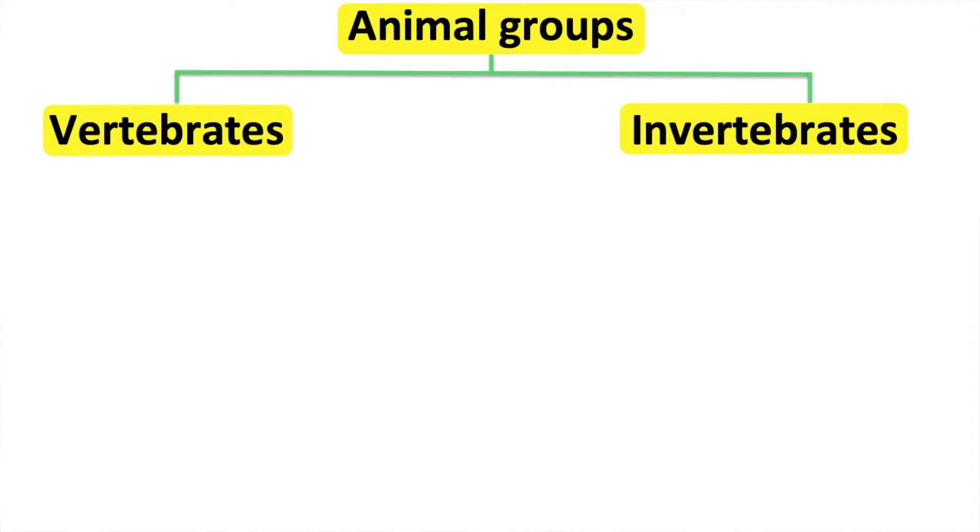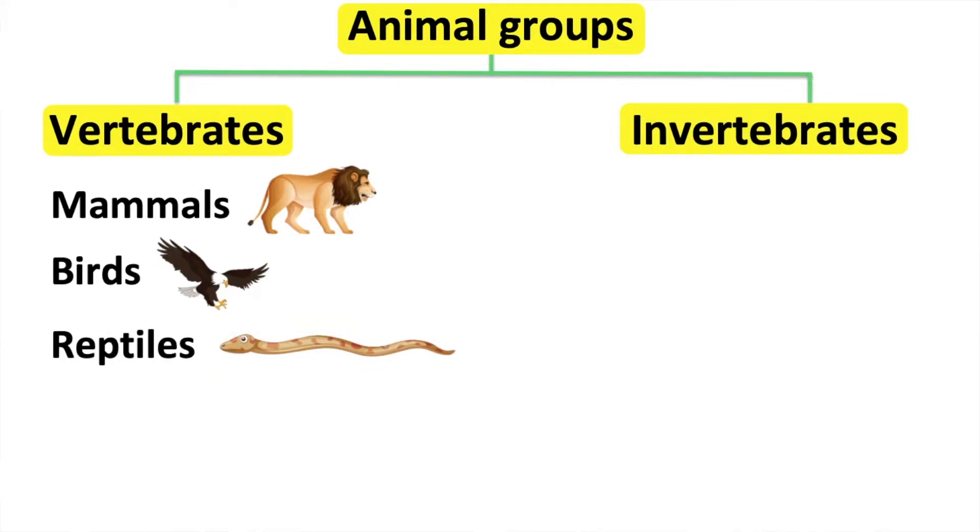There are five groups of vertebrates: mammals, birds, reptiles, amphibians, and fish.